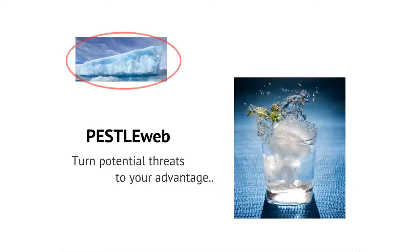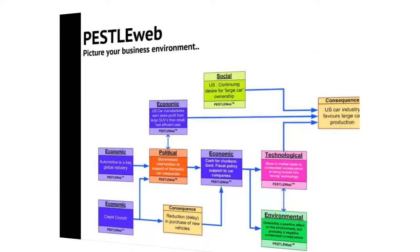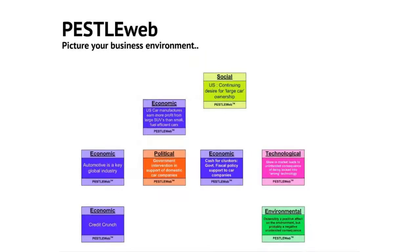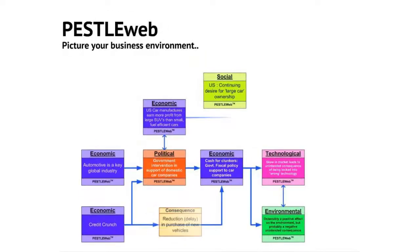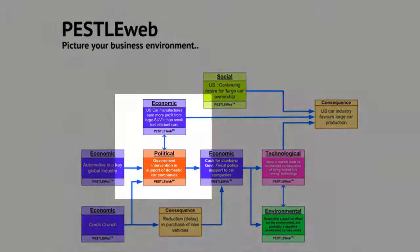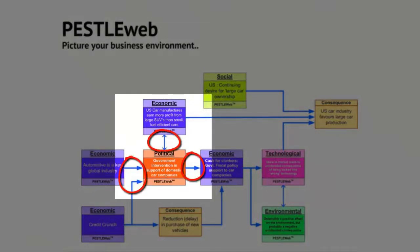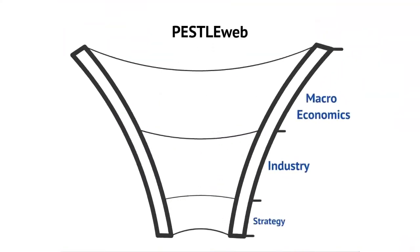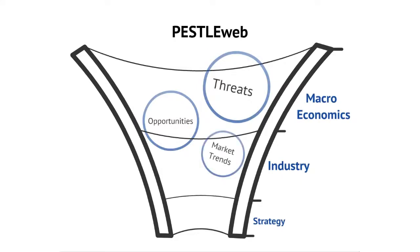Pestelweb helps you turn potential threats to your advantage. It is a powerful tool for exploring, communicating, and documenting your business environment. Visualize the different factors and dynamics acting on situations, and get more out of your analysis of threats, opportunities, market trends, and rival movements. Explore the risks and benefits of your strategy by evaluating the impact of different business scenarios.